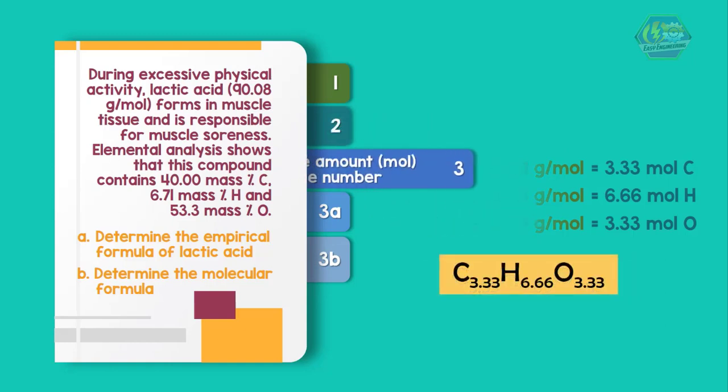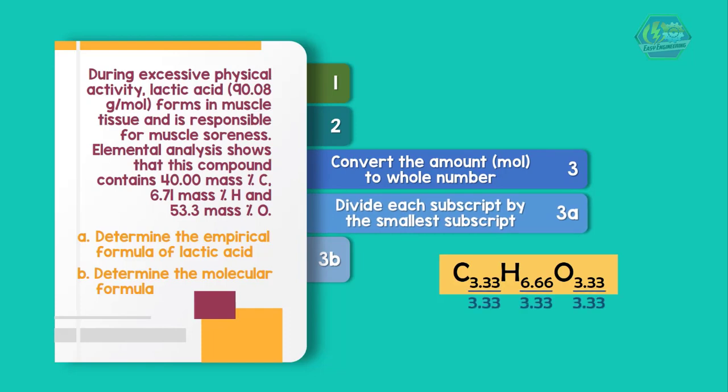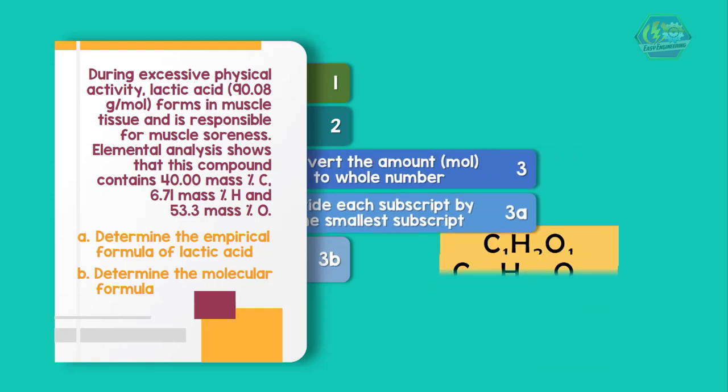Third step: convert the amount mole to whole number. Divide each subscript by the smallest subscript. We have subscripts that are already integer, so there is no need to multiply it by any integer. So we now have the empirical formula CH2O.